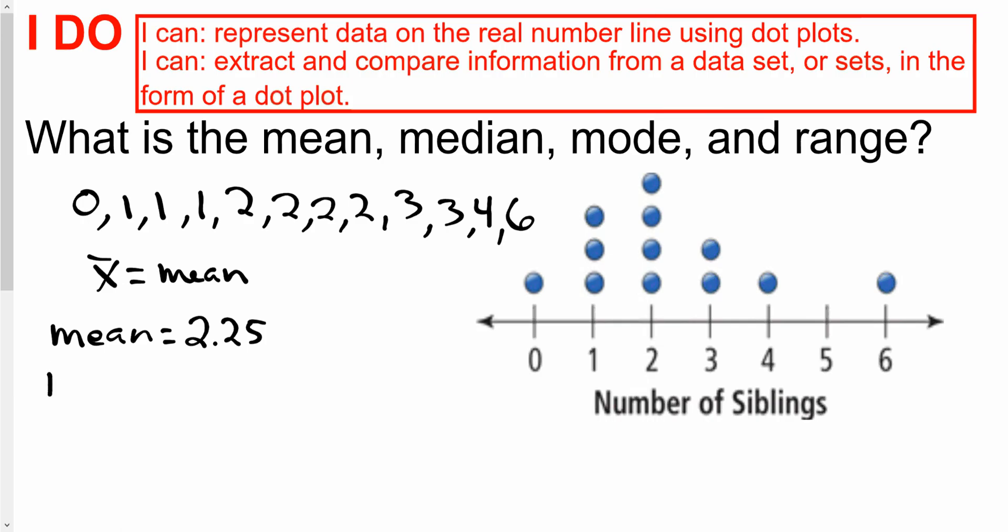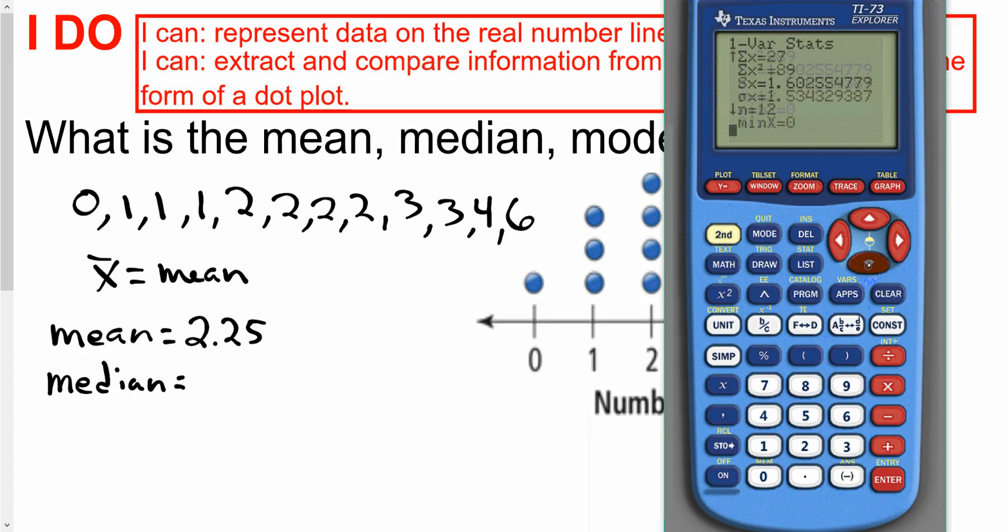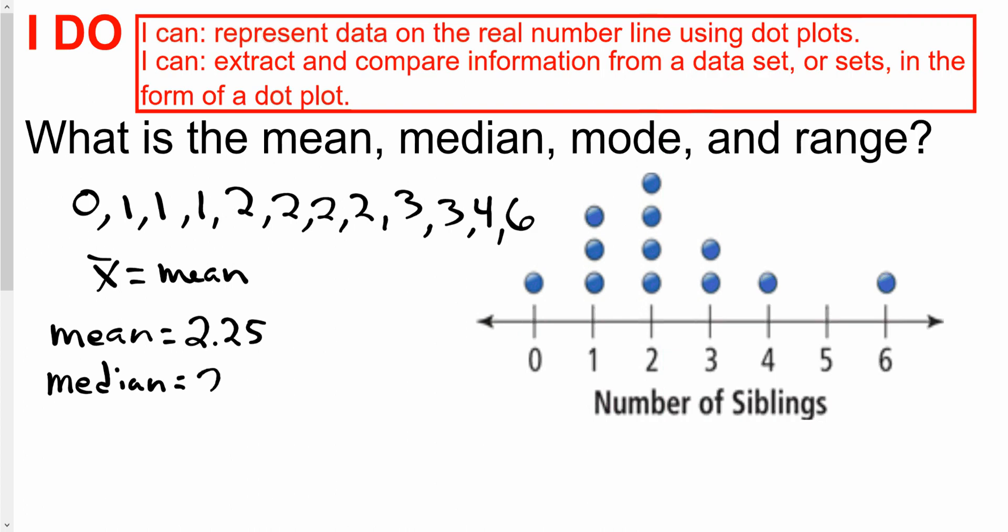The other thing that my calculator will tell me is the median. I'll also show you how to find the median here on the dot plot. But the median, if you scroll down, is right there. Median is two. The mode is actually really easy to see from the dot plot. The mode is going to be 2 here.